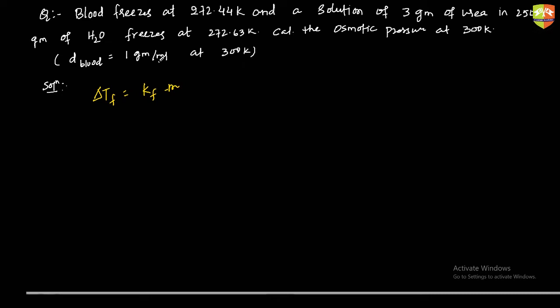Kf is not given in this question. So first, molality m = (3 gram of urea ÷ 60, the molecular mass of urea) ÷ (250 grams of water × 1/1000). This gives you the molality.